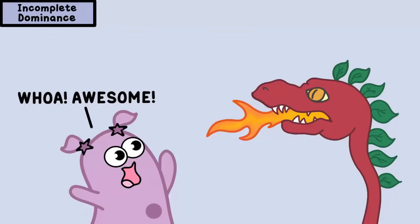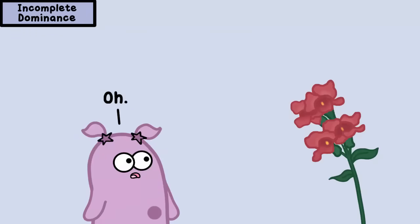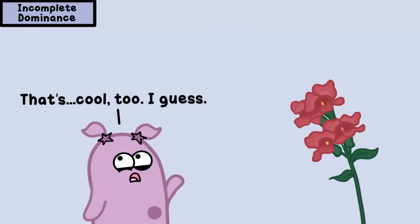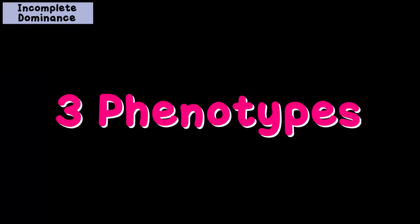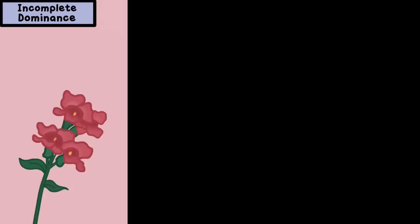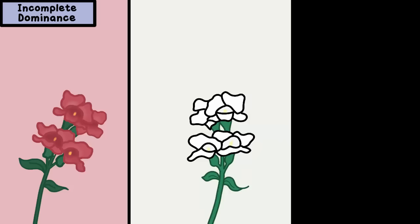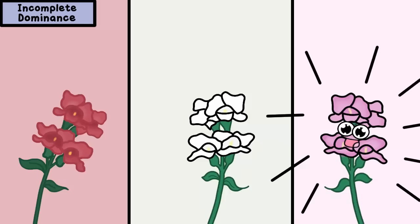Let's first start with snapdragons. We confess that when we heard this word, we thought they were some really amazing kind of creature. Well, they are amazing, but they're flowers. In snapdragon genetics, there can be three phenotypes: red, white, or something in between — pink.